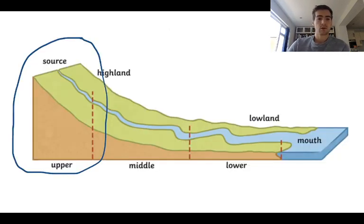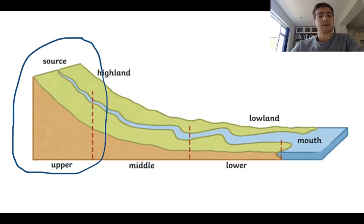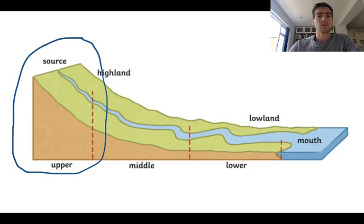We're going to focus today on the landforms and features we find in the area that is circled — so the upper course, or just the area where the hills and mountains are.